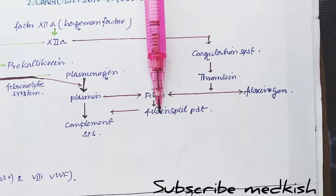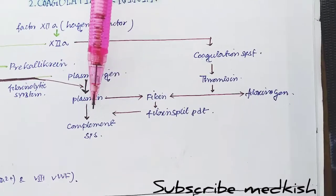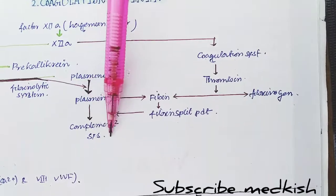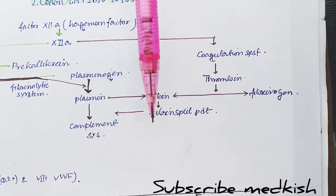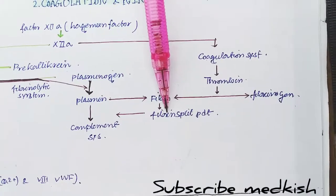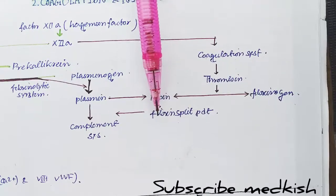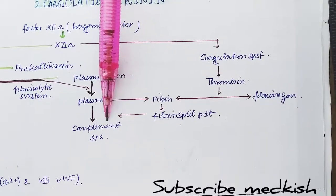Fibrin split product helps in the formation of plasmin to deactivate the complement system, or the fibrin split product will help plasmin to activate the complement system.